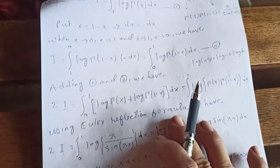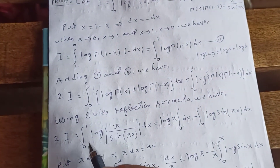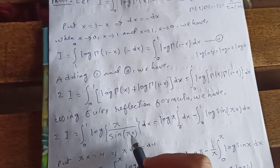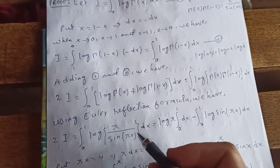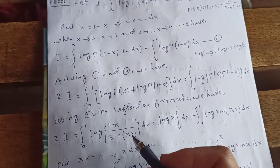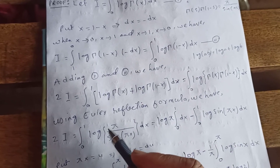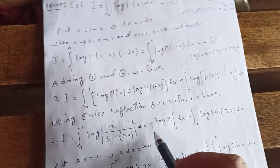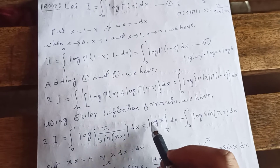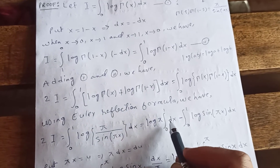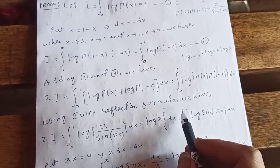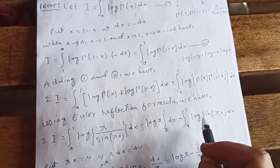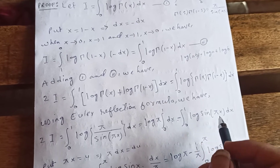Then we get 2I equals the integral from 0 to 1 of log(π over sin(πx)) dx. Again using the log property that log(a/b) equals log(a) minus log(b), this becomes log(π) times the integral from 0 to 1 dx, minus the integral from 0 to 1 of log(sin(πx)) dx.